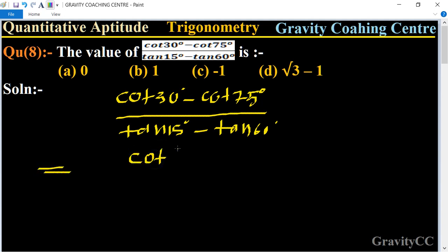90 minus 60, and cot 75 degree, so 75 you can write them 90 minus 15, minus 15 degree upon tan 15 degree minus tan 60 degree.